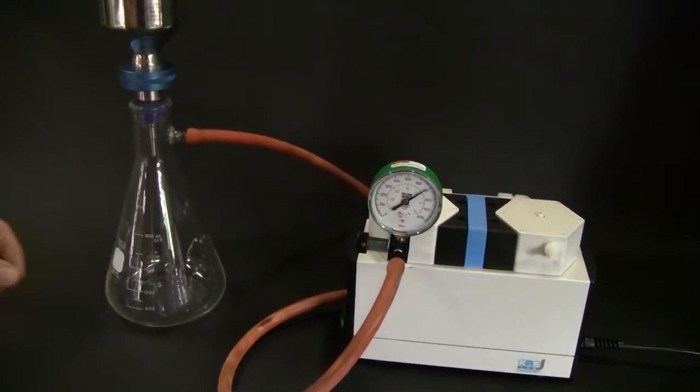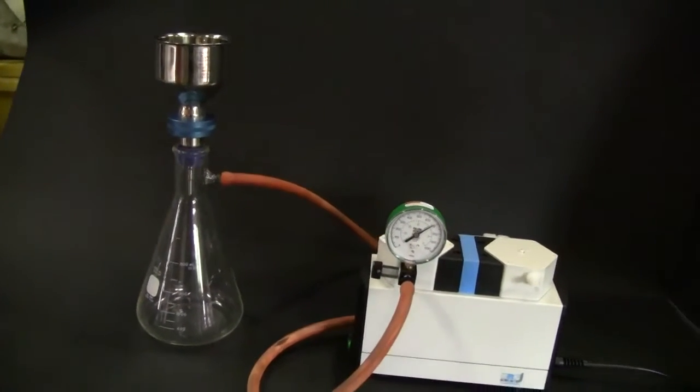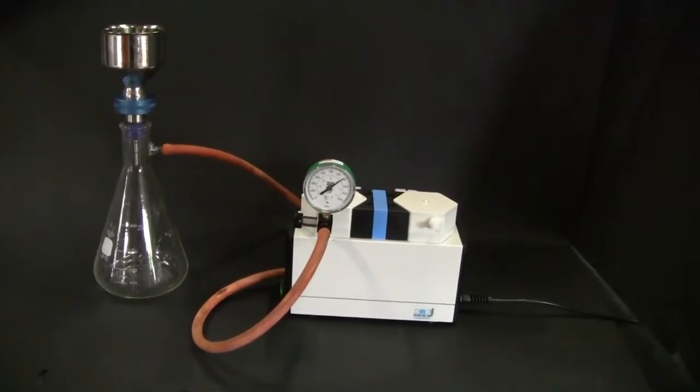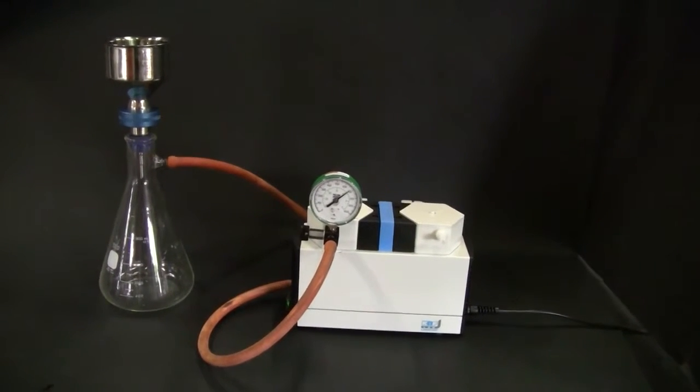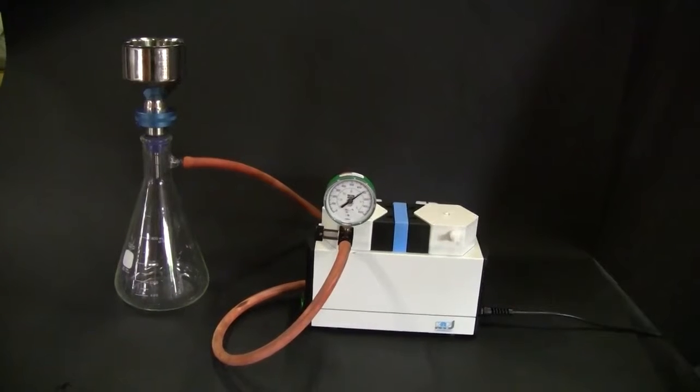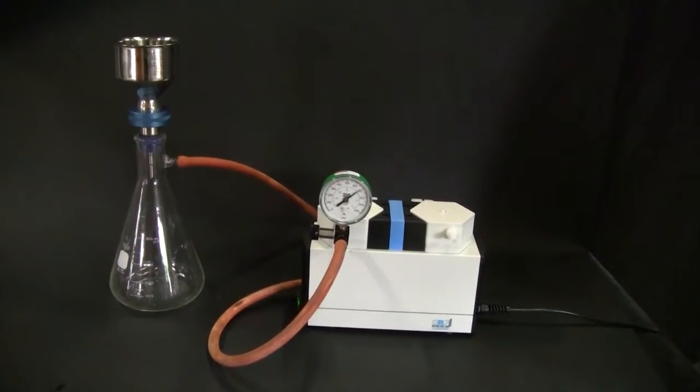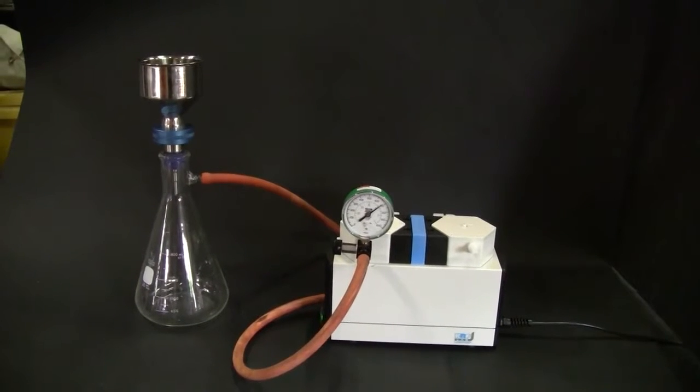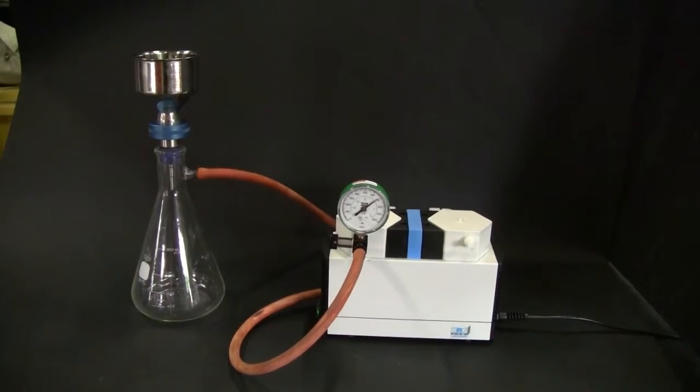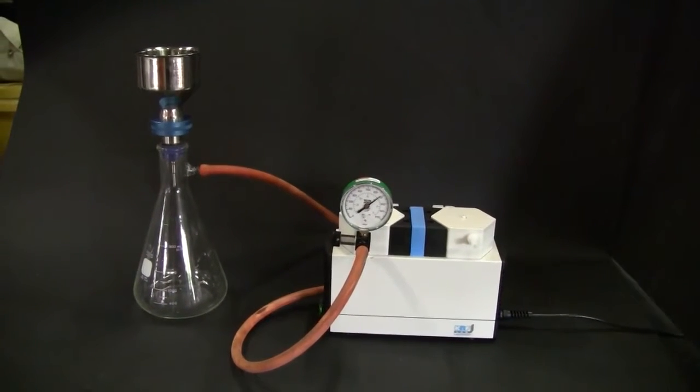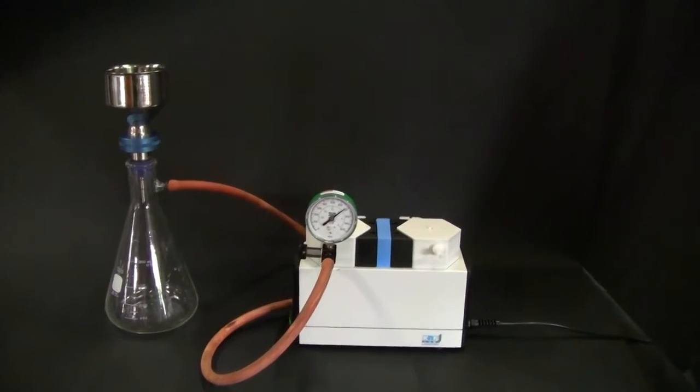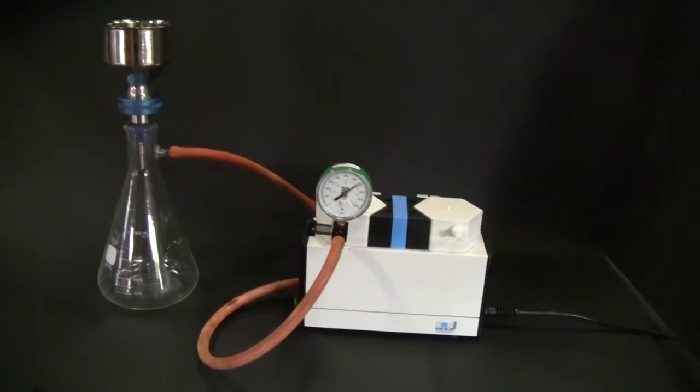What this package does, it makes it more versatile for the complete lab. You can be using the KNF pump for a rotovap and pulling 10 millibar, 6 torr on it, or you can take it off, put it on a quick filtration application, and adjust into that 700 millibar setting.